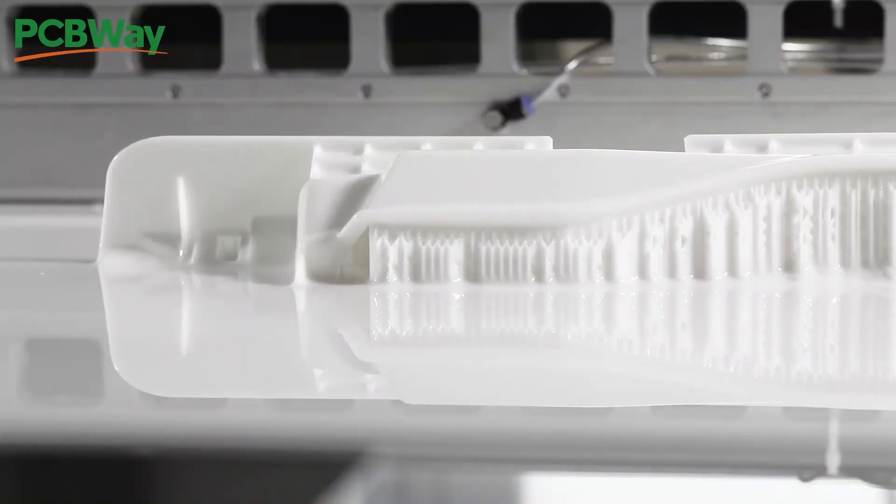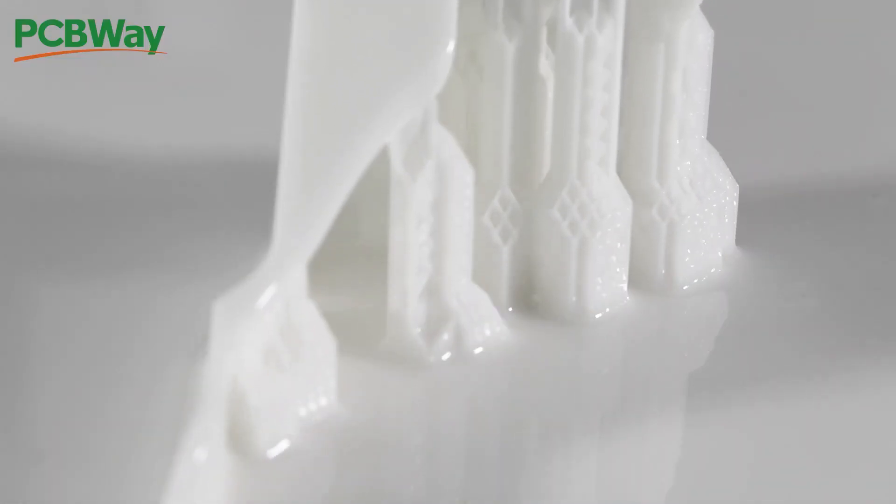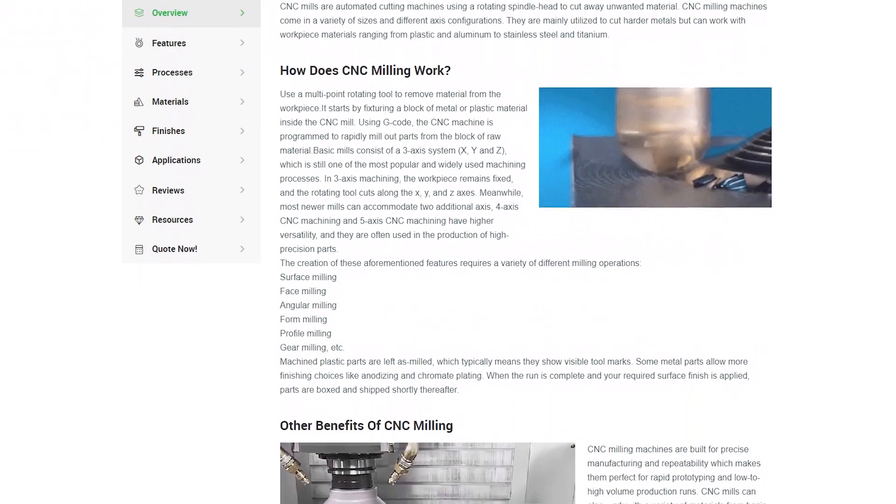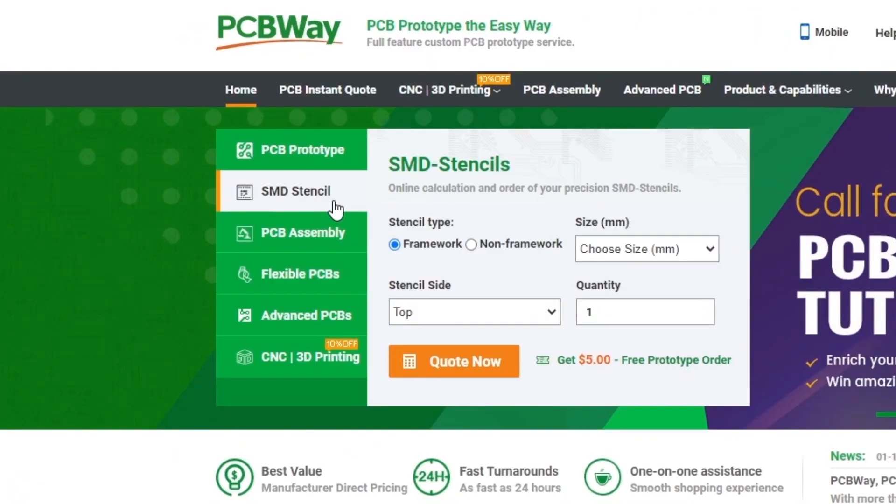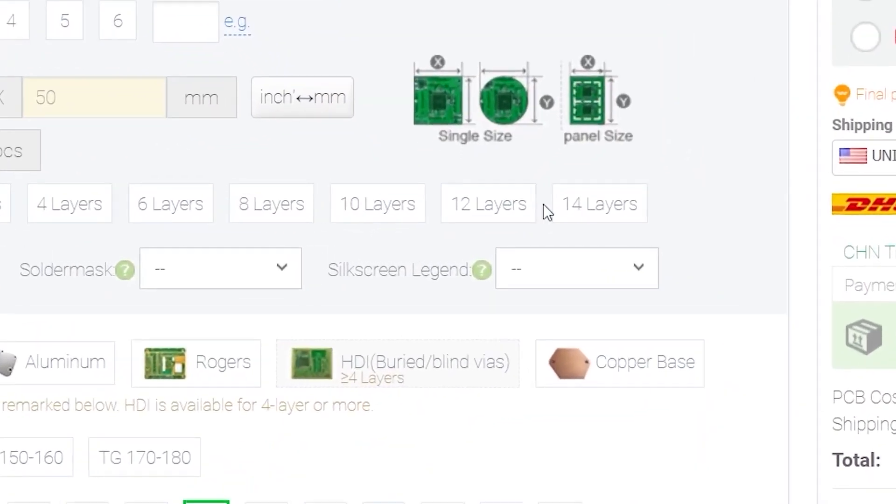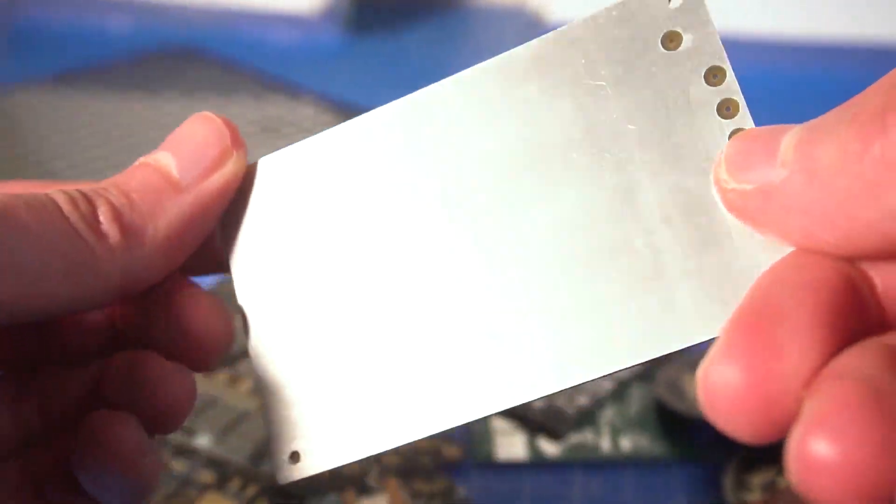On their website you can order all sorts of amazing stuff. If you'd like to get super detailed parts, you can try their SLA 3D printing service. If you need something more durable, why not try their CNC machining offer? And I'm not even talking about the variety of PCBs that you can get on their website, because there's basically everything.